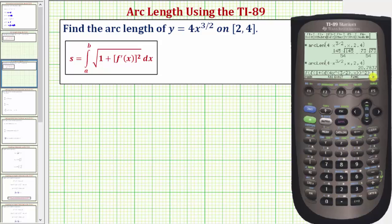Comma the variable of integration which is x, comma. The limits of integration are from 2 to 4, so 2 comma 4, close parenthesis, and enter.